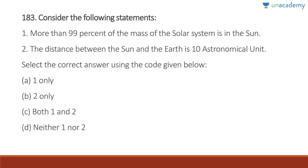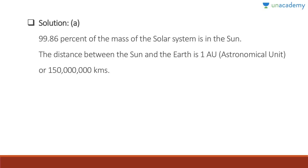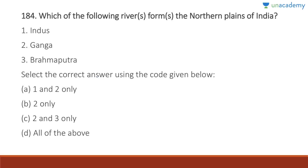Question 183: More than 99% of the mass of the solar system is in the sun — correct. The distance between the sun and the Earth is 10 astronomical units — wrong. An astronomical unit is defined as the distance between Earth and the sun, which is obviously 1 AU. Answer is A, one only. The distance between the sun and Earth is 150 million kilometers.